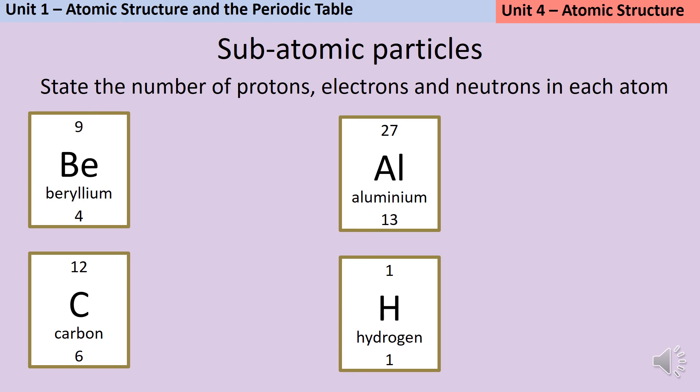Let's do some quick practice now, calculating the numbers of protons, electrons and neutrons in each of these elements. So, as we said, the atomic number is also called the proton number, and that tells me the number of protons that there are. So in this atom of beryllium, there are going to be four protons, because the smaller of the two numbers on the periodic table square is four. I also know that in an atom, the number of protons and electrons will be the same, so electrons are going to be four as well. And then to work out neutrons, I do my little subtraction. So nine take away four is five.